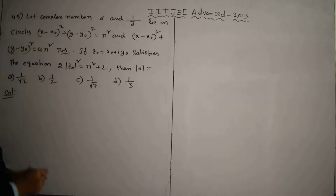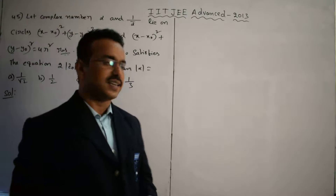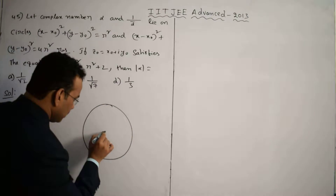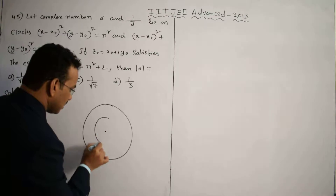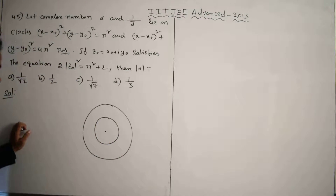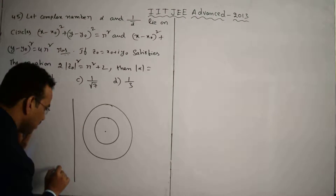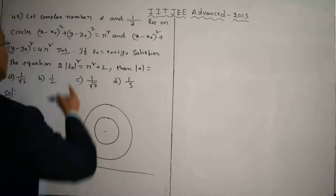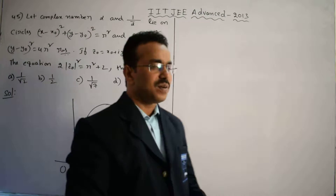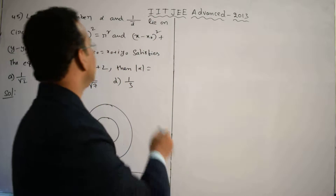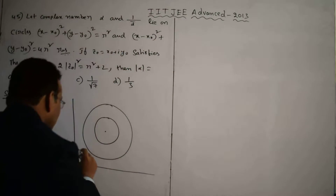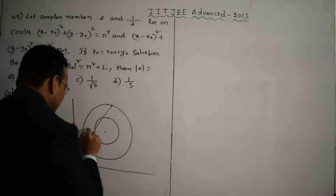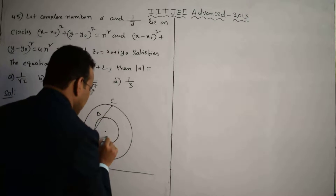Clearly from the given information the two circles are concentric circles. Let's draw the diagram. Take one inner circle and one outer circle with the same center. Add the y-axis and x-axis. Now, α and 1/ᾱ lie on the respective circles. Draw a line and label the points as a, b, c, d.